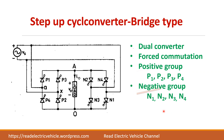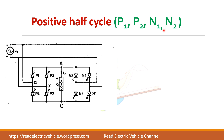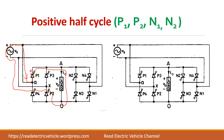During the positive half cycle, P1 and P2 are forward biased — current flows from A to O. Then N1 and N2 are turned on for the same duration, causing current to flow from O to A. P1 and P2 are turned on for some time, then N1 and N2 are turned on, and this process is repeated again and again.